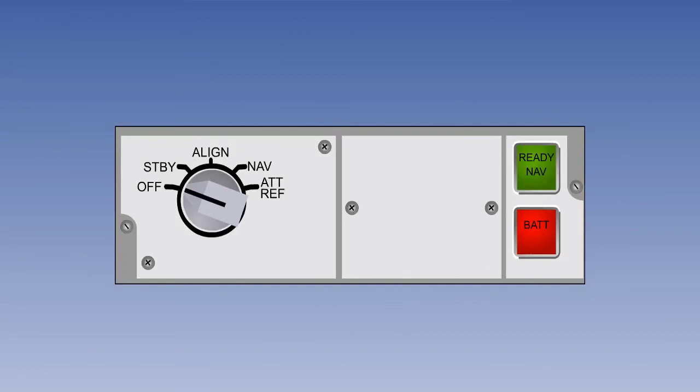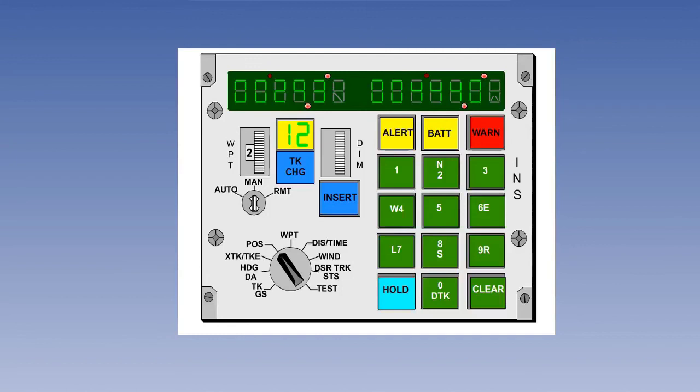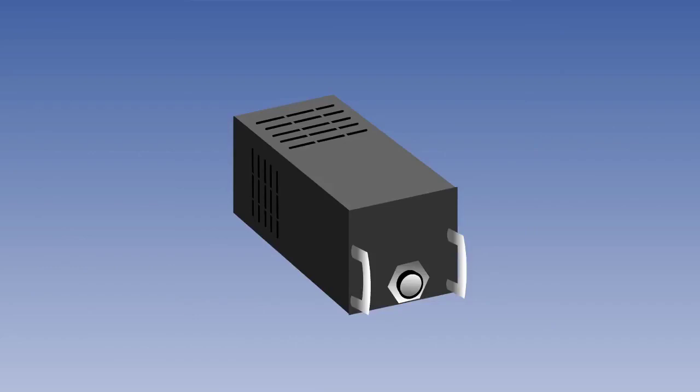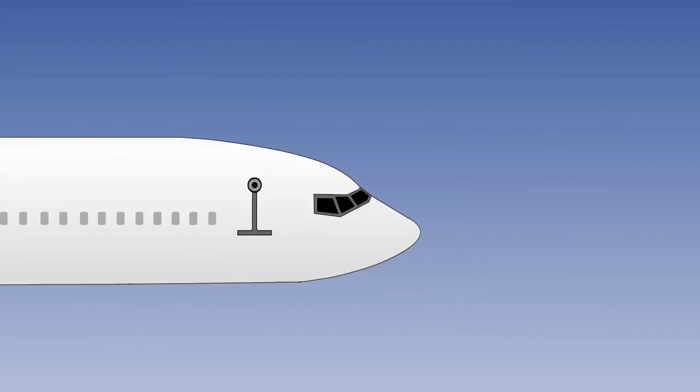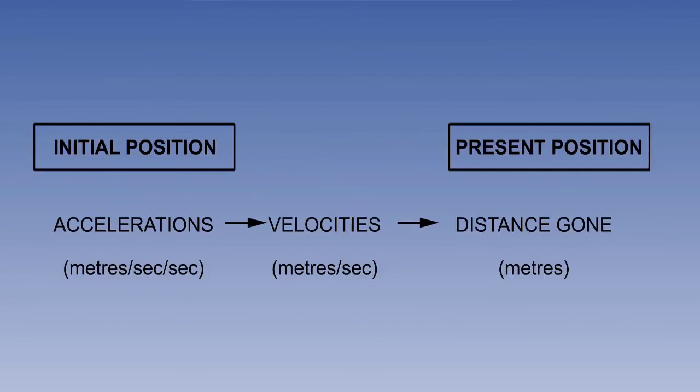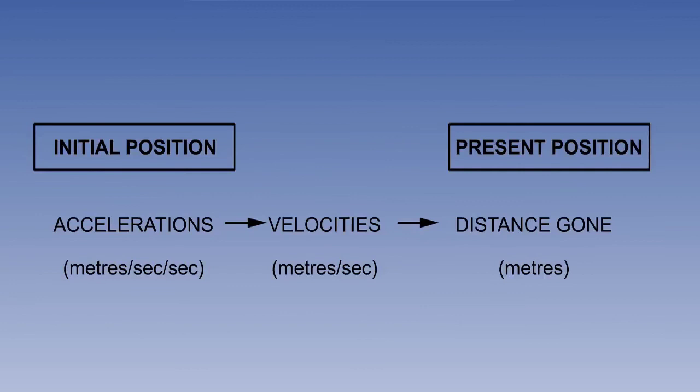The basic units of the INS are the mode selector unit, or MSU, the control and display unit, or CDU, and the inertial navigation unit, or INU. Accelerometers measure accelerations, which are integrated first into velocities, then into distance gone. By knowing where we were when we started, and adding up how far we have gone, we can work out where we are now.